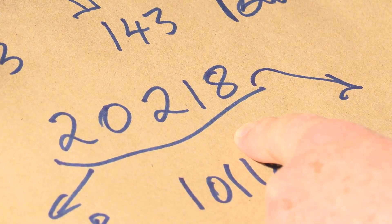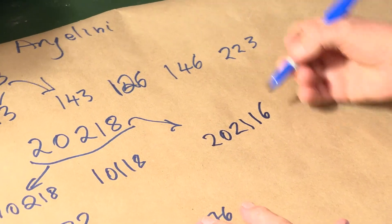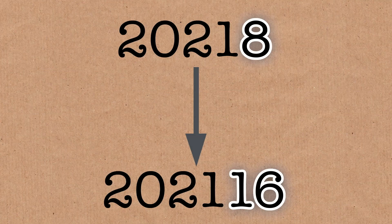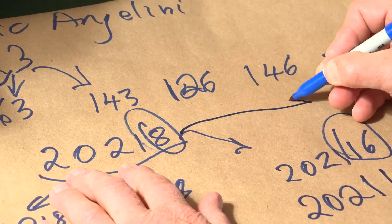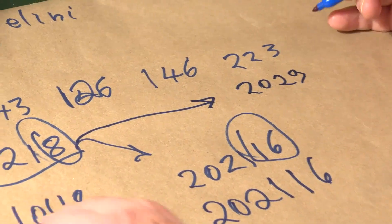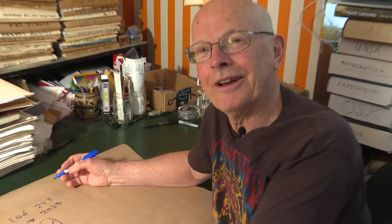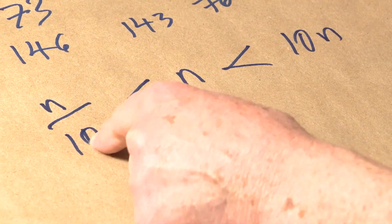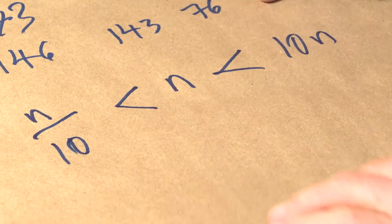From 2 0 2 1 8, if I pick that 8 and double it, we get 2 0 2 1 1 6 — that 8 has become 16 in place, keeping the 2 0 2 1. Or I could take that 18 and divide it by 2 and we would get 2 0 2 9, shortening the length by one digit. It's not difficult to prove that if you start with a number n, what you get by this operation is at most 10n and at least n over 10. That's with one step.